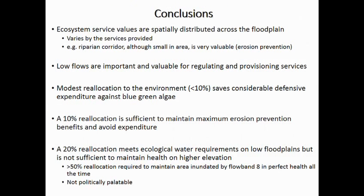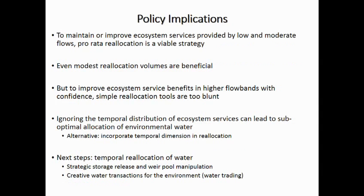In conclusion, this proves our hypothesis that ecosystem services are spatially and temporally distributed. We know that for optimal health the Murray-Darling Basin needs high and variable flows, but we've shown here that low flows are also quite important and very valuable for provisioning services and regulating services such as erosion prevention and blue-green algae prevention. However, for the higher elevation floodplains, considerable reallocation is needed to meet environmental water requirements all the time — greater than 50% in this case, which is not politically palatable. The main policy implication is that blunt reallocation policies can in fact be quite sub-optimal if you don't take into account the temporal distribution of these biophysical processes and the ecosystem services that go with them. Thank you.